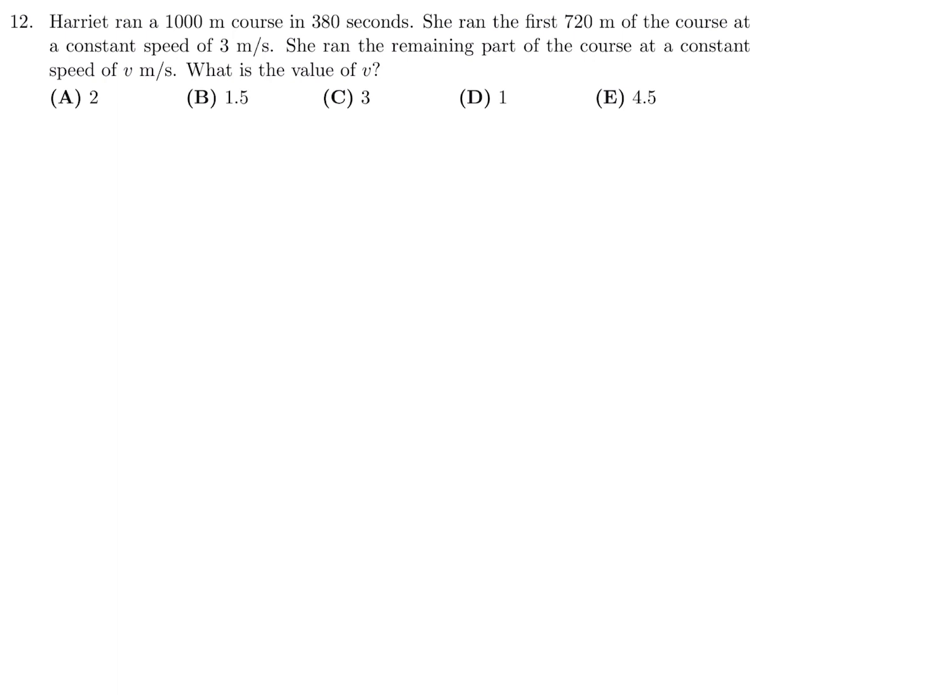Harriet ran a 1,000 meter course in 380 seconds. She ran the first 720 of the course at a constant speed of 3. She ran the remaining part of the course at a constant speed of V. What is the value of V? Well, speed is equal to distance over time, or time is equal to distance over speed. The total amount of time is 380 seconds. And we've got to break that up into two components.